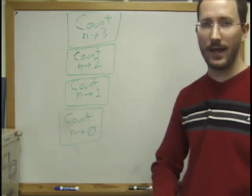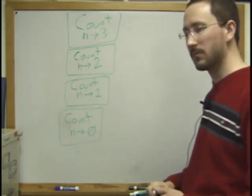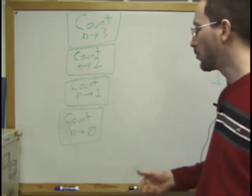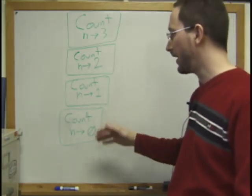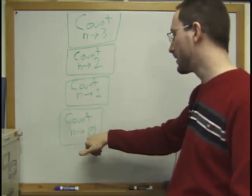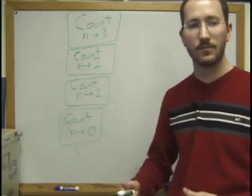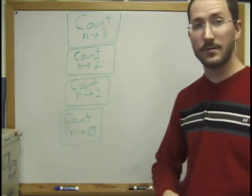And here's where something different happens. This is where the recursion terminates. So when we go into the if statement for this guy, we do the test. We say, is n bigger than 0? And we ask the question, is 0 bigger than 0? And the answer is false.